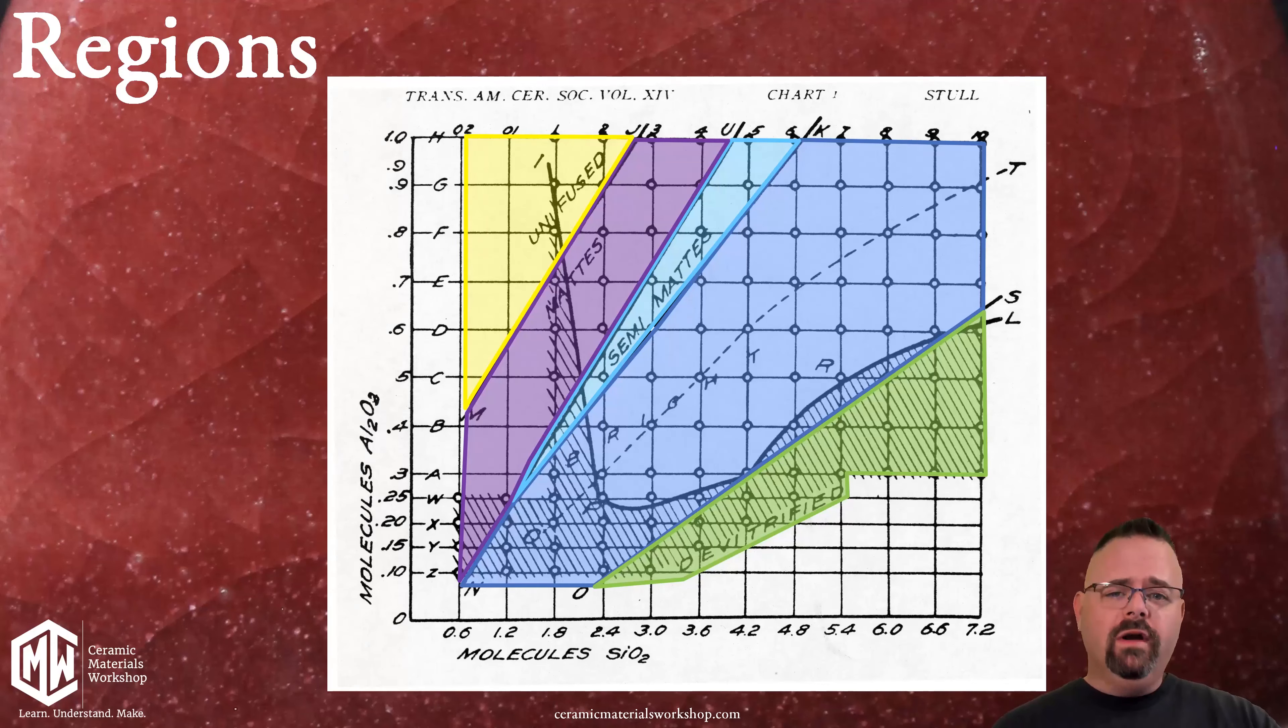But of course that's what the map is showing us. Now there are some interpretive skills that are needed to look at this map and to understand what it's doing but really that's it. Does your glaze fall in the glossy section, in the matte section, or in the under fired section and is it meeting its expectation? And if it's not we need to think about that glaze a little bit more.